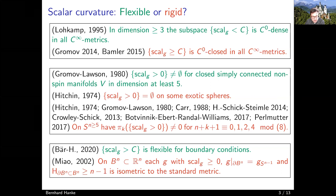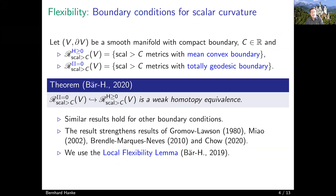Recently, together with Christian Bär, I proved a flexibility result concerning boundary conditions for scalar curvature. On the contrary, there is a rigidity result telling us that on the n-disk, non-negative scalar curvature metrics which restrict to the standard metric on the boundary and have mean curvature at least that of the (n−1)-sphere must actually be isometric to the standard metric. Let me explain what this boundary condition for scalar curvature is — it is a quite recent result.